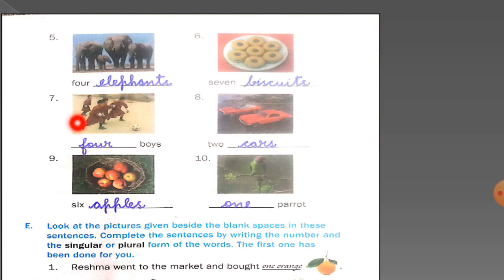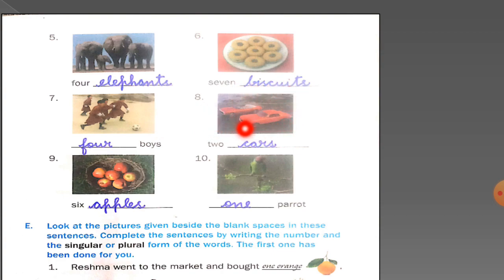In the seventh picture, you can see boys playing football. Count the number of boys: one, two, three, four — so you write 4. In the eighth picture there are two cars, so you will write 'cars.' In the basket, count the apples: one, two, three, four, five, six — total six apples, so write 'apples.' In the tenth picture, there is only one parrot, so write the number 1 — spelled O-N-E.